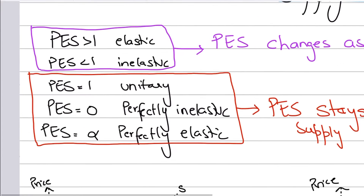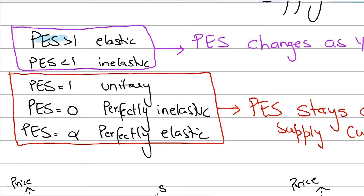We've already studied that if PES is greater than 1, supply is elastic; if PES is less than 1, it is inelastic; if PES equals 1, it is unitary elastic; if PES equals 0, it is perfectly inelastic; and if PES equals infinity, it is perfectly elastic.